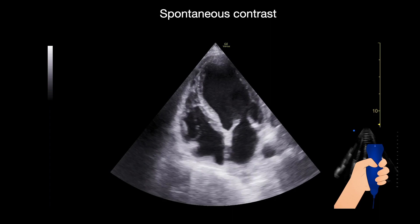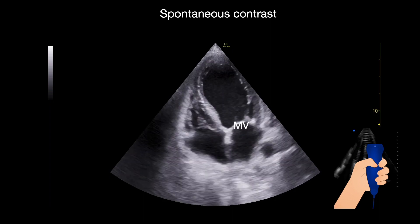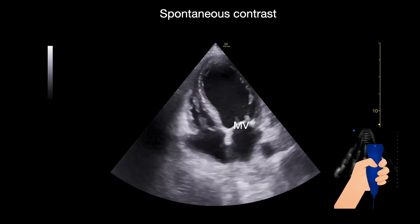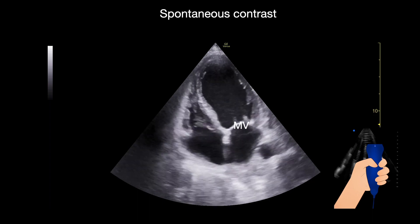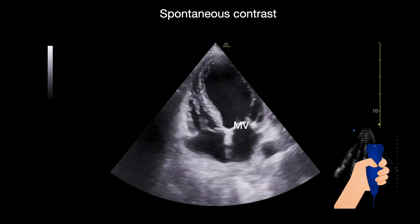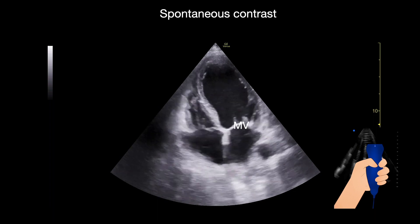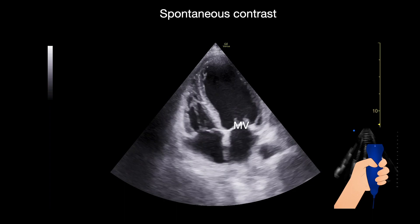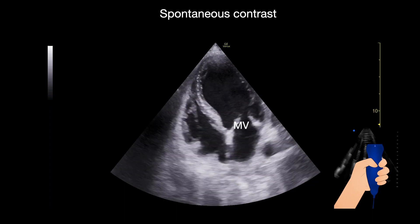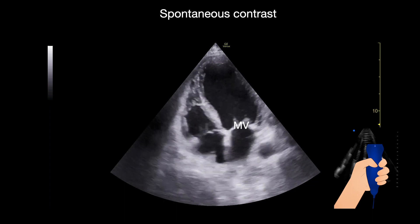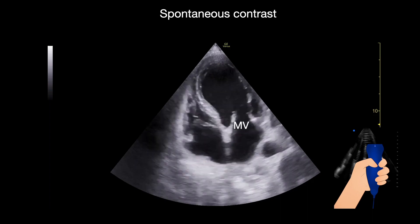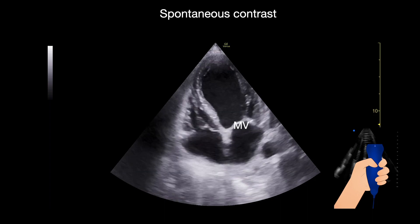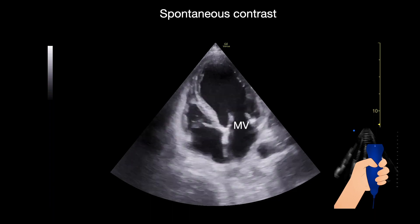You can see how from the mitral valve there is kind of a smoke coming from it, and this is because of erythrocytes and also fibrinogen that are causing this turbulent flow and causing this spontaneous contrast. You can also see that the left ventricle barely moves — this patient has a very low ejection fraction.